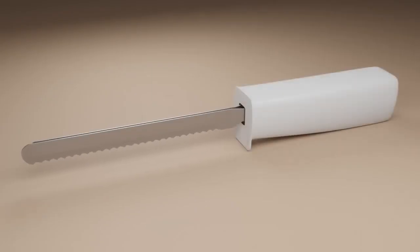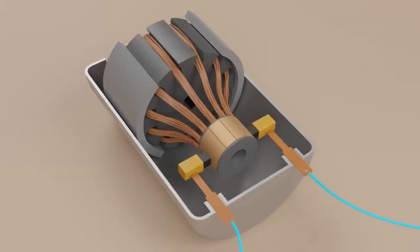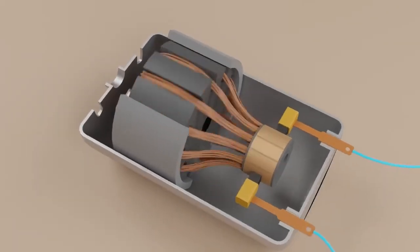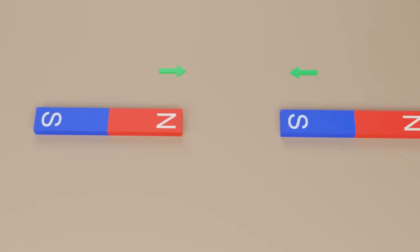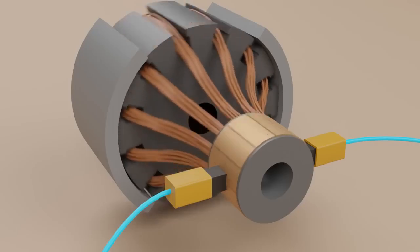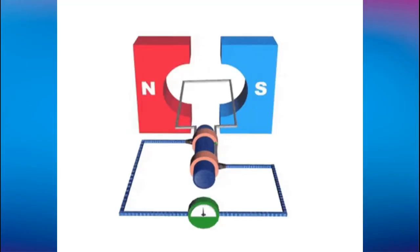By understanding how a motor works, you can learn a lot about magnets, electromagnets, and electricity in general. An electric motor uses magnets to create motion. If you have ever played with magnets, you know about the fundamental law of all magnets: opposites attract and likes repel.